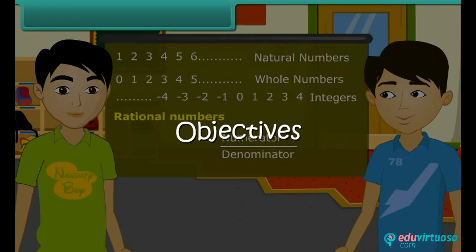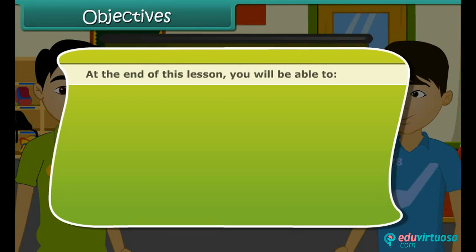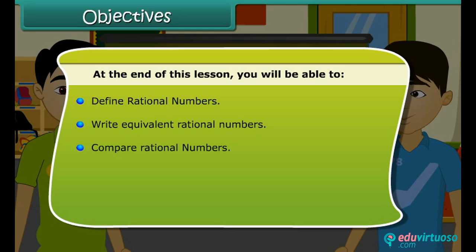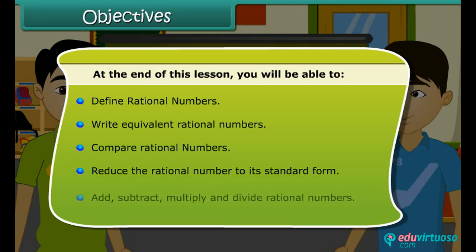Objectives. At the end of this lesson you will be able to: define rational numbers, write equivalent rational numbers, compare rational numbers, reduce the rational number to its standard form, and add, subtract, multiply and divide rational numbers.